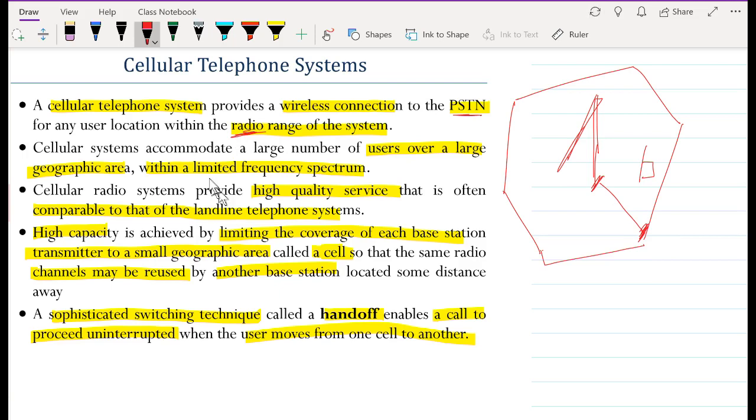Cellular systems accommodate a large number of users over a large geographical area. This can be as large as five kilometers. So five kilometers is a huge area that can be served by a cell, and therefore that can be served by one base station. These users are going to be served within a limited frequency spectrum.